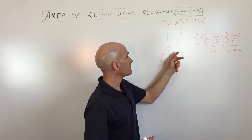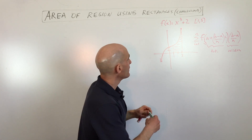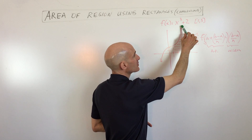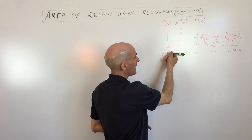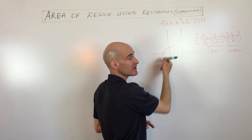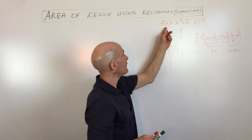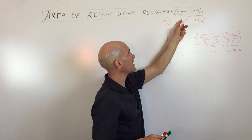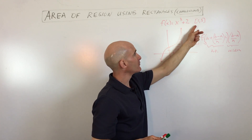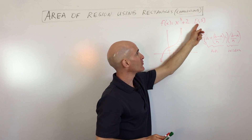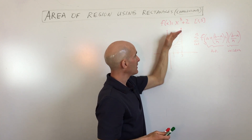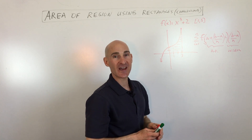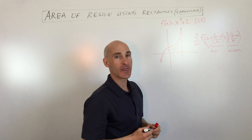What we're going to be doing is dividing up this region below this curve and in between the x-axis. Our function here is f of x equals x cubed plus two, and we're going to be finding the area of the region between one and three, below the curve and above the x-axis. I've shaded that region right here.